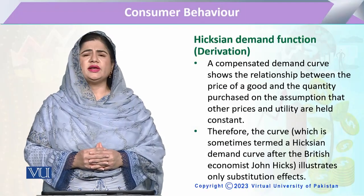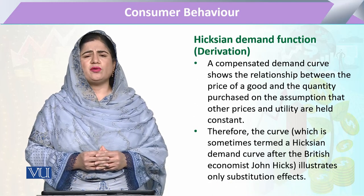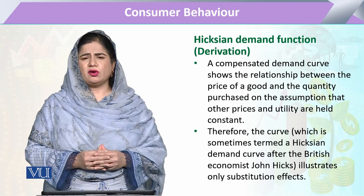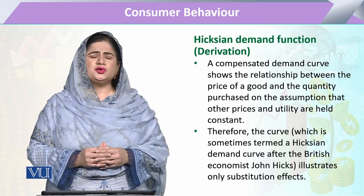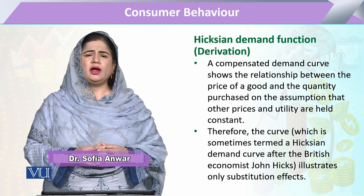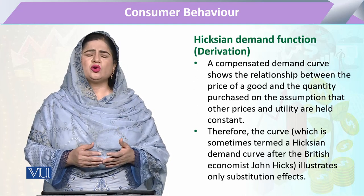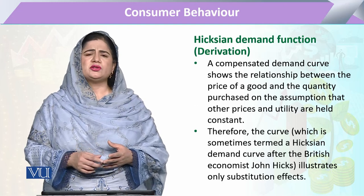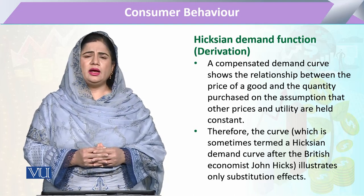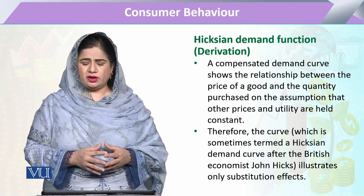That is the derivation of the Hicksian demand function. As we have already discussed, the Hicksian demand function is the relationship of the quantity demanded of the consumer with its change in price, keeping the utility level constant. So if we keep utility constant, we can derive the same demand curve using two methods. We assume two commodities with their respective prices — one commodity's price will change while the other is kept constant, utility is kept constant, and income may vary from point to point.